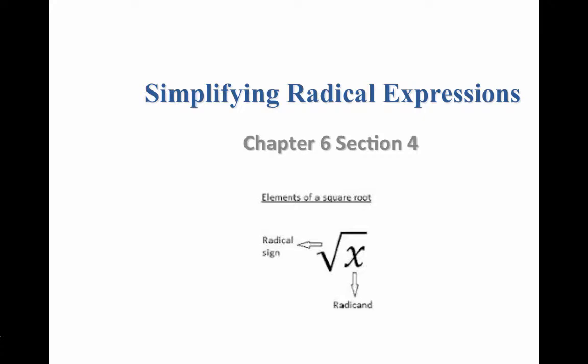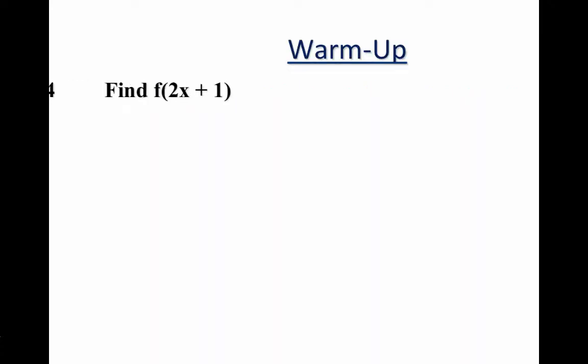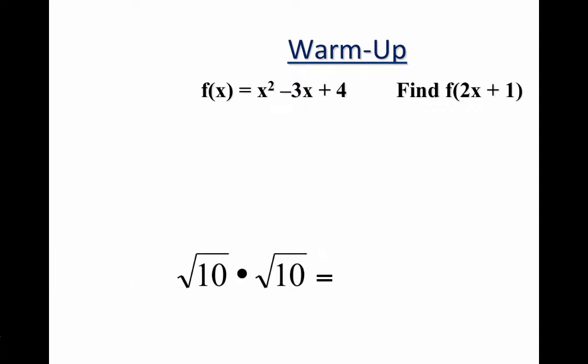Square root of 10 times the square root of 10 is 10. You can multiply square roots, remember? The square root of 100 is equal to 10. So, when you multiply a square root times itself, it is undone.